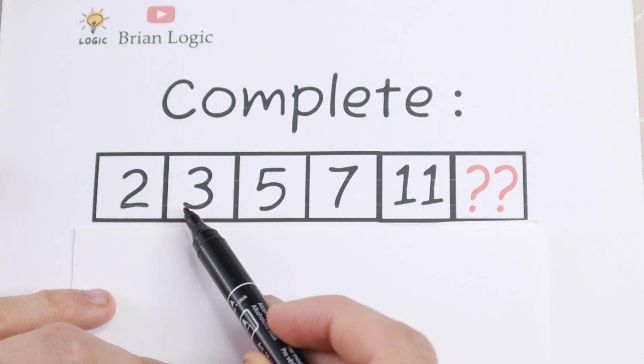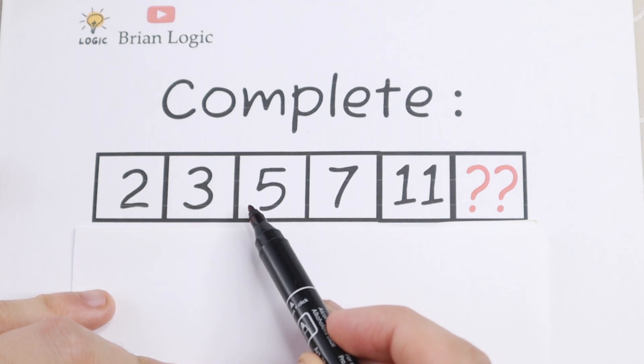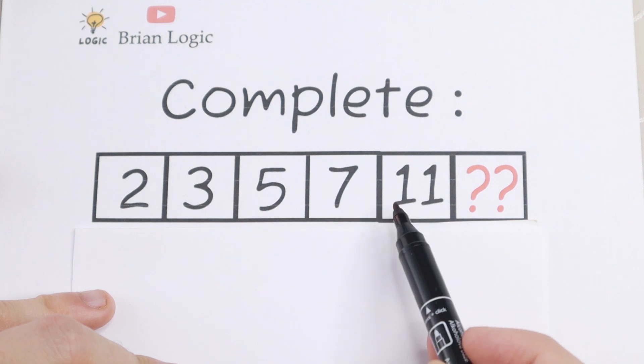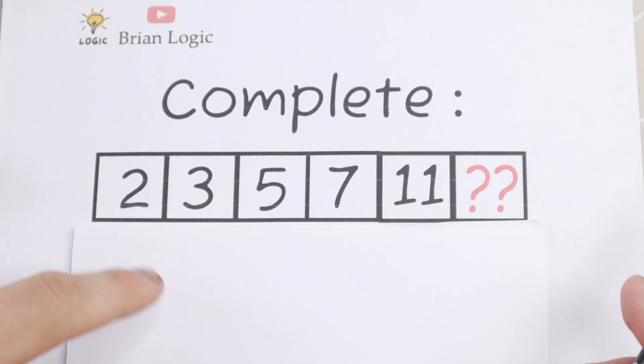If we add 1 to this 2 we'll have 3, right here we need to add 2, right here 2 and right here 4. So as for me there is no pattern between 1, 2, 2 and 4.